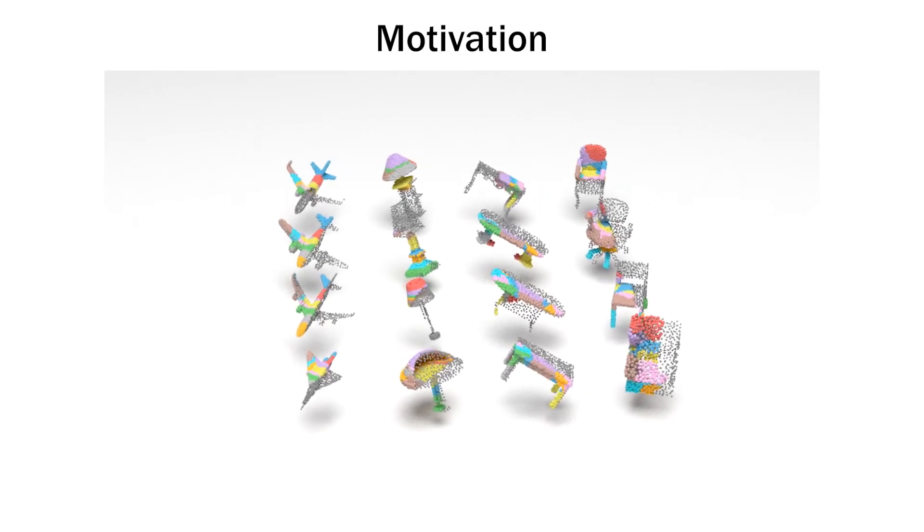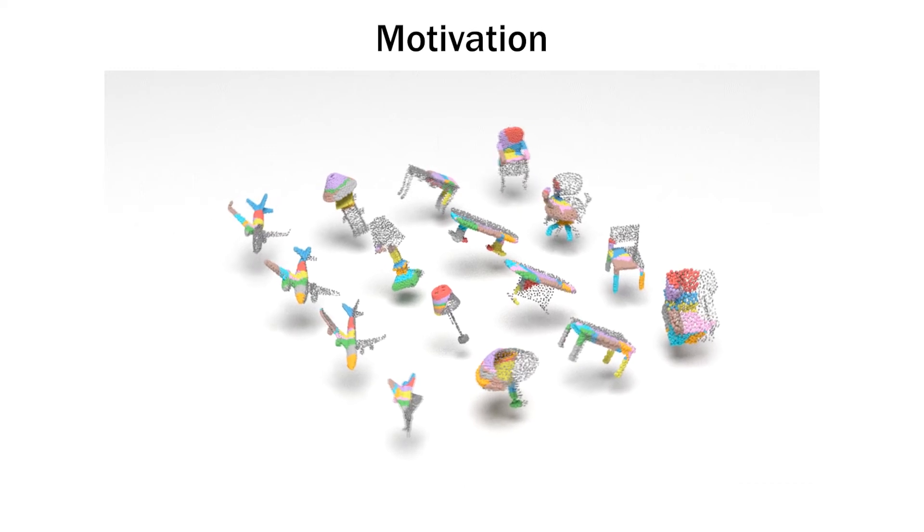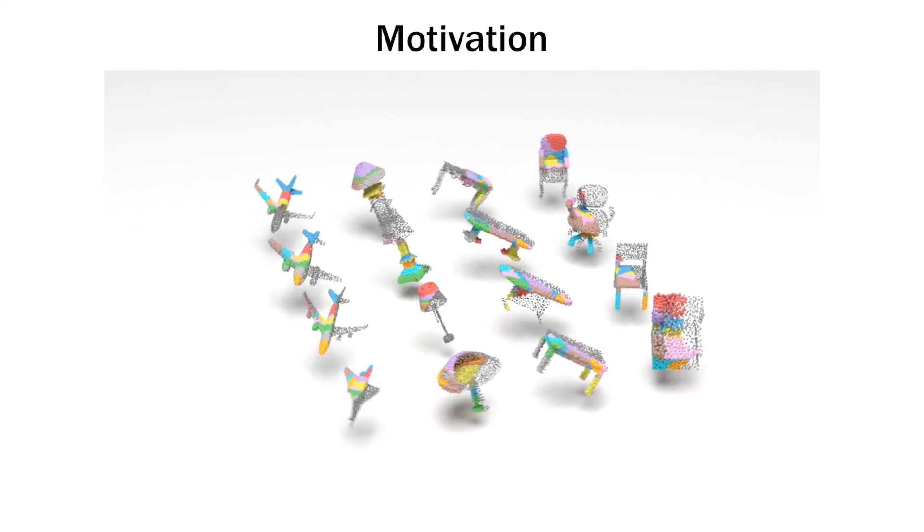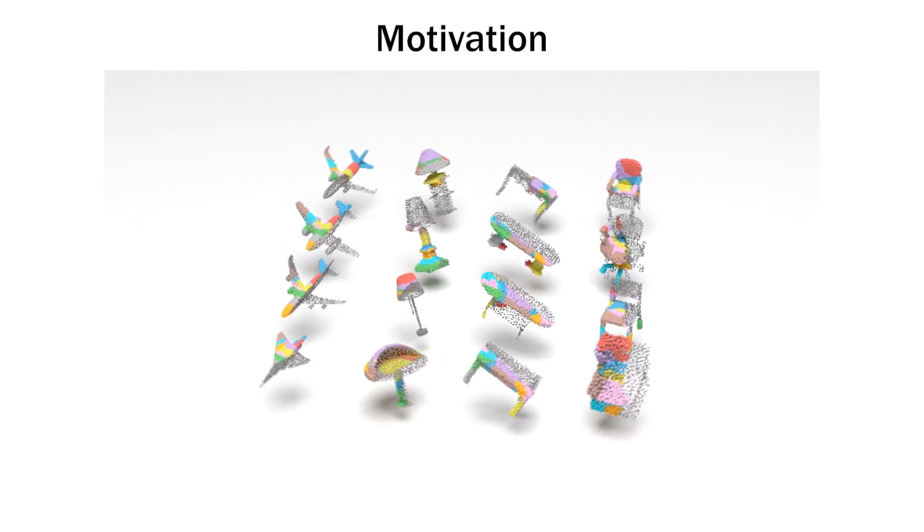Condor estimates a canonical frame, both rotation and position, from full and partial shapes represented as point clouds. We achieve this by training over uncanonicalized shapes only.